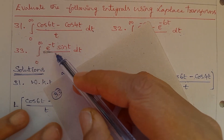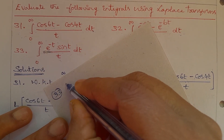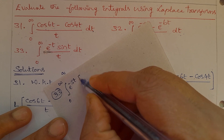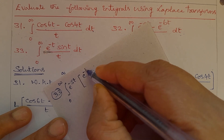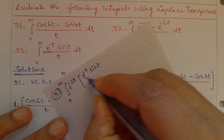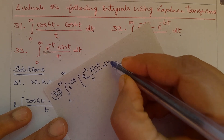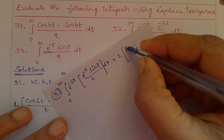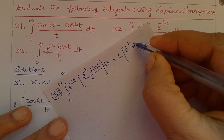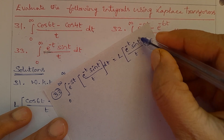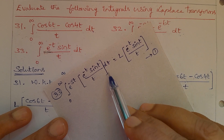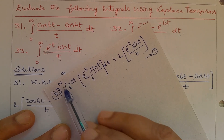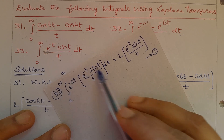Problem number 33: Integral from 0 to infinity of this expression. We know that the integral from 0 to infinity of e^(-st) times f(t) dt is the Laplace Transform of f(t). So, the integral of 0 to infinity e^(-st) times e^(-t) sin(t) divided by t, dt is the Laplace Transform of e^(-t) sin(t) divided by t. Call it equation number 1.